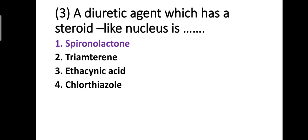Question number three: a diuretic agent which has a steroid-like nucleus is — option one: spironolactone, option two: triamterene, option three: ethacrynic acid, option four: chlorthiazide. The correct answer is option one — spironolactone is the diuretic agent which has a steroid-like nucleus.